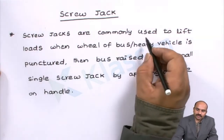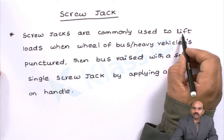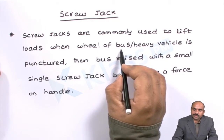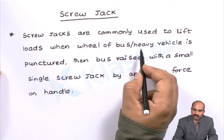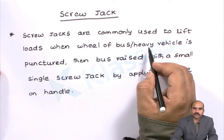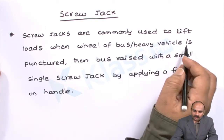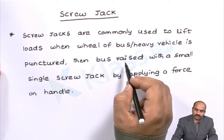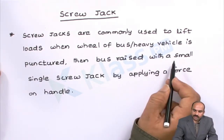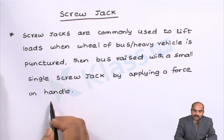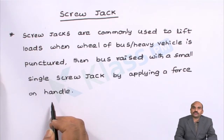The application of screw jack is that these are commonly used to lift heavy loads. When the wheel of buses, cars, or heavy vehicles — or any heavy weight — needs to be lifted, you will be using a screw jack. When vehicles are punctured, you will have to raise the vehicle with a single screw jack by applying force by hand. So let us discuss the working principle of the screw jack with the help of a diagram.